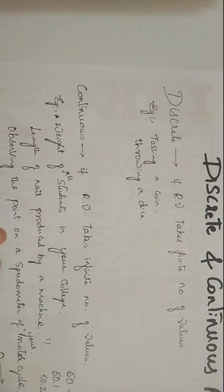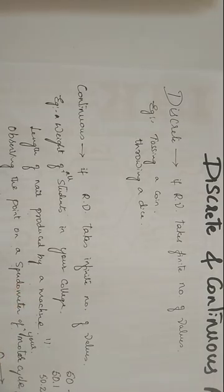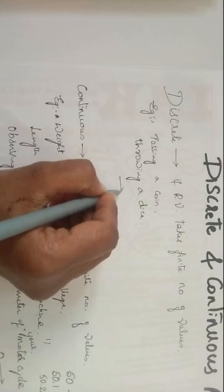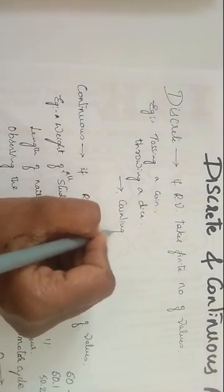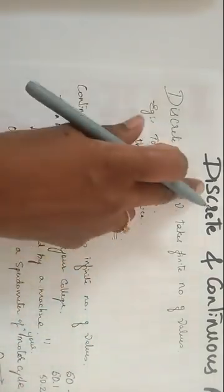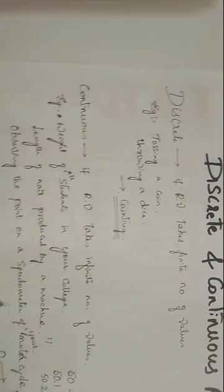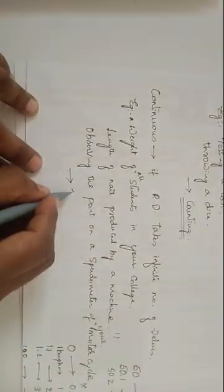To summarize: all counting experiments will have a discrete random variable, and all measuring experiments will have a continuous random variable. This is how you can distinguish between the two types.